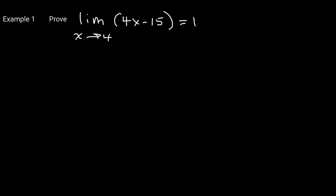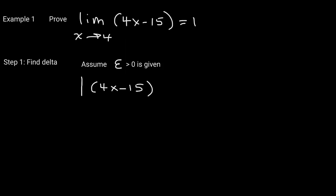We're going to set up our proof in two steps. Step number one is to find delta. We're going to assume that some positive number epsilon is given. What we want is the distance between our function 4x minus 15 and 1 to be less than epsilon.